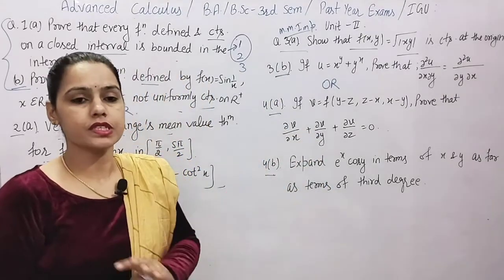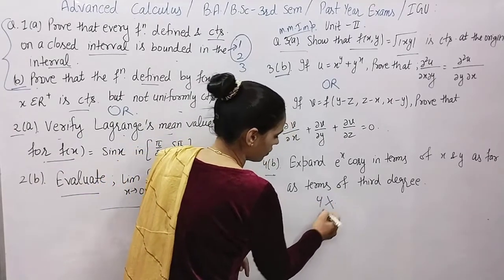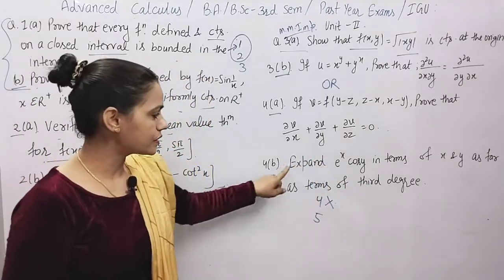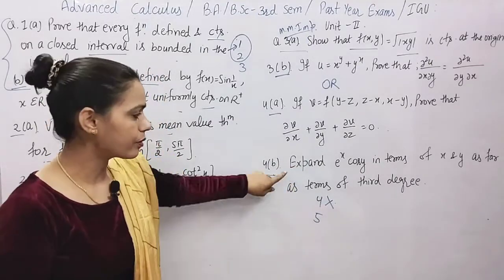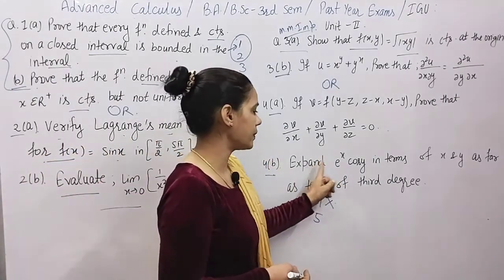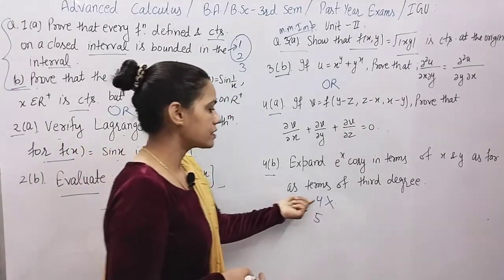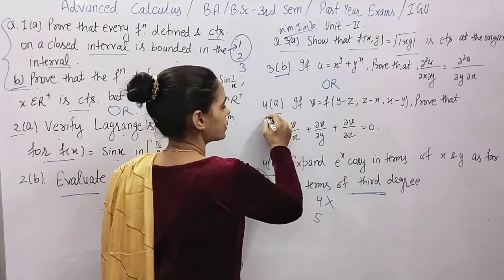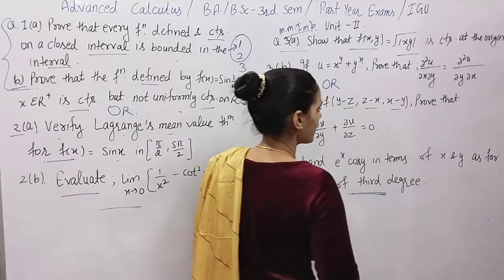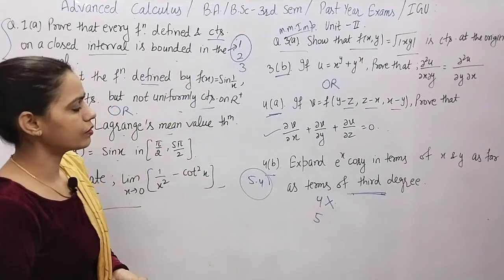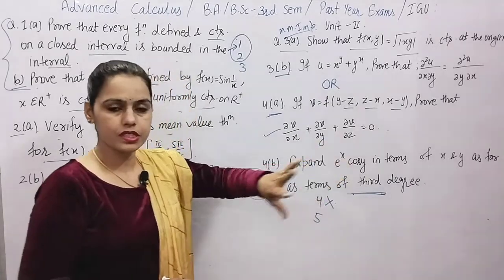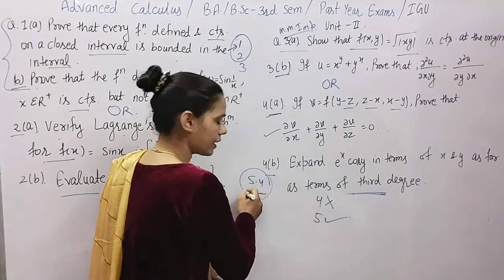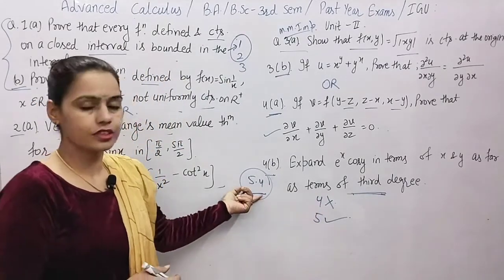All five chapters are on partial differentiation, so you can skip chapter four here. The fifth chapter is complete — you will see that from the last exercise, one question is definitely asked. We saw the MDU paper had one such question, and here also: Expand e^(x·cos y) in terms of x and y up to the third degree. This is the most important exercise — exercise 5.4.